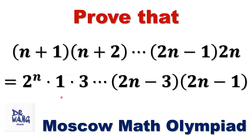Let's look at this equation carefully. The left-hand side is a product of n consecutive numbers starting from n+1 to 2n. The right-hand side is 2 to the power of n times the product of n consecutive odd numbers starting from 1 to 2n-1.